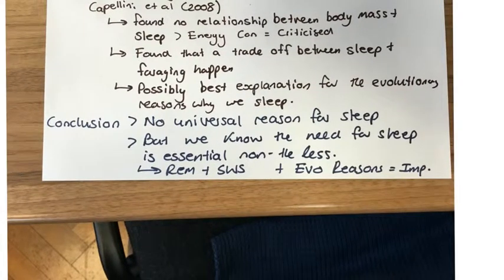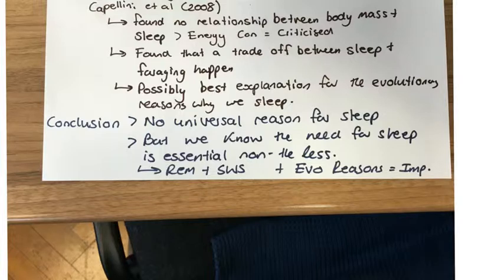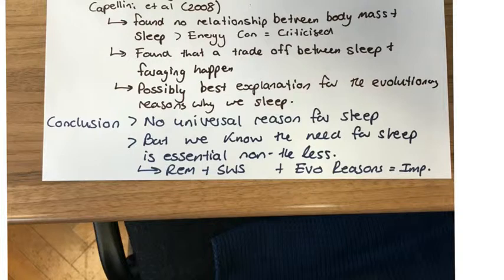For the conclusion, there is no universal reason for sleep, but we know sleep is needed for essential reasons such as avoiding predators and restoration of the body. We cannot consider any one theory in isolation — they are all interlinked and together give us a greater picture of what sleep provides for humans and animals. When writing your conclusion, make sure you emphasise that there is no universal reason for sleep.